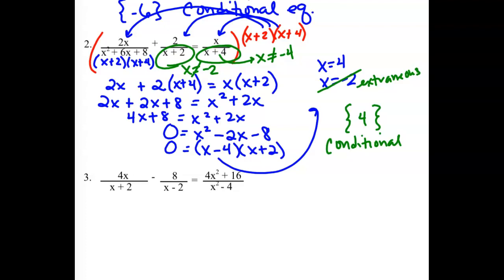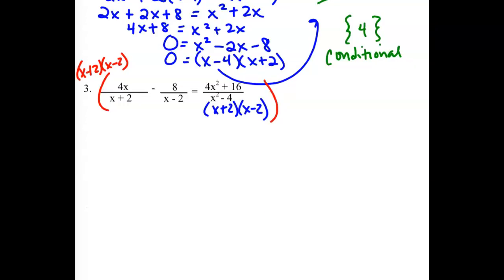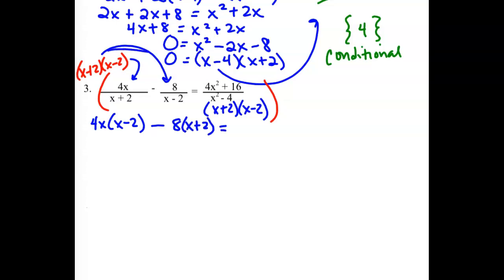Our next one again has some factoring to look at. x squared minus 4 factors into x plus 2 and x minus 2. Our common denominator needs both of those factors. Multiplying through by x plus 2 and x minus 2, the x plus 2s drop out for the first fraction — we still have 4x and the x minus 2 piece. We are subtracting. The x minus 2s drop out for the second fraction, leaving 8 and x plus 2. On the far side, both pieces drop out but we still have 4x squared plus 16.